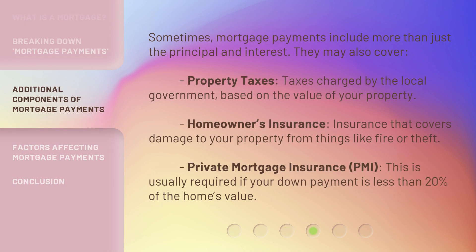Sometimes, mortgage payments include more than just the principal and interest. They may also cover: property taxes — taxes charged by the local government based on the value of your property; homeowner's insurance — insurance that covers damage to your property from things like fire or theft; and Private Mortgage Insurance (PMI) — which is usually required if your down payment is less than 20% of the home's value.